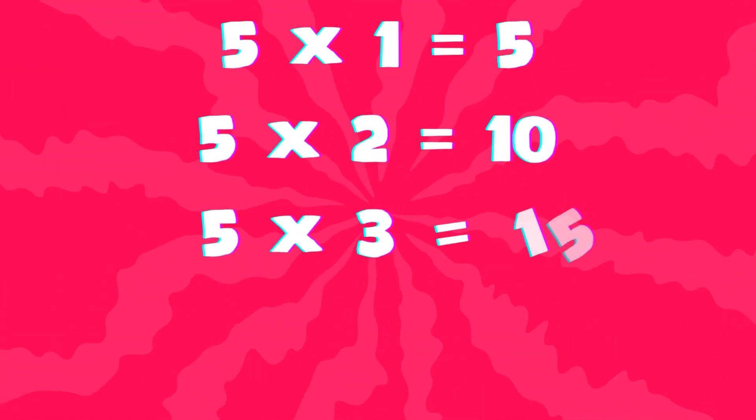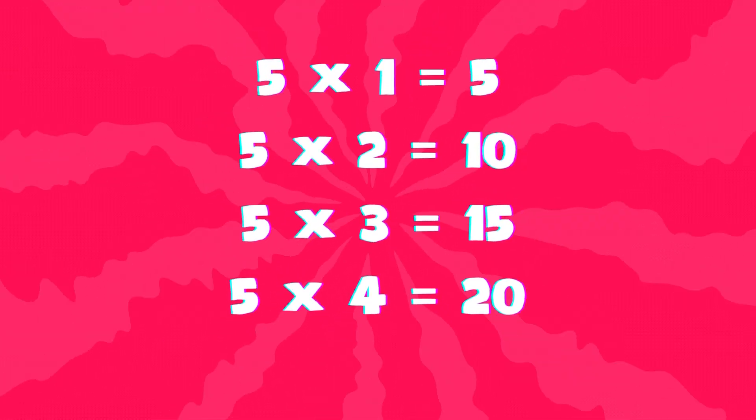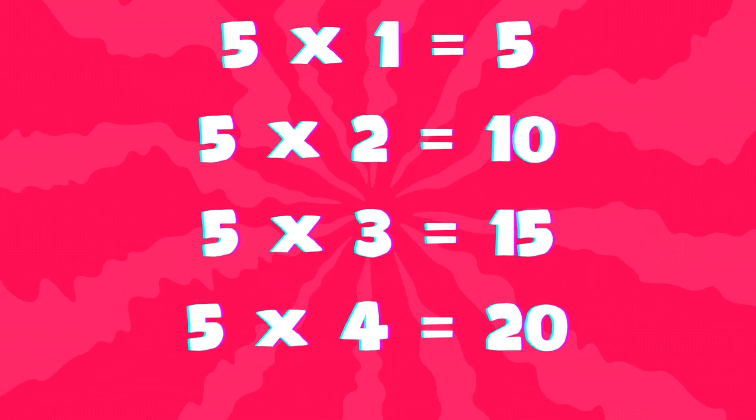5 times 1 is 5, oh that's so neat. 5 times 2 is 10, feel the rhythm and the beat. Times 3 is 15, now we're on a roll. 5 times 4 is 20,